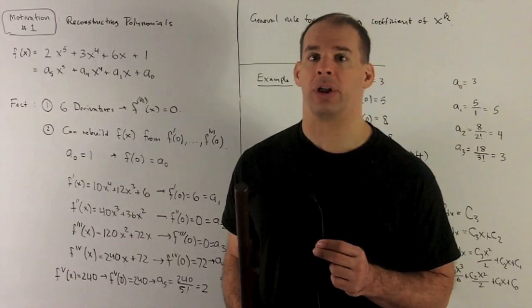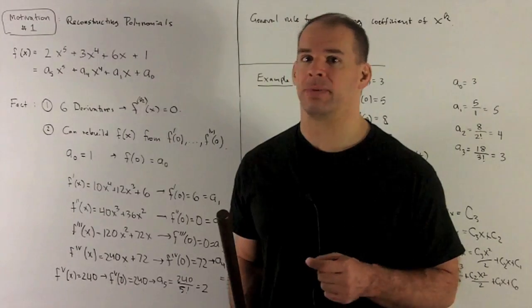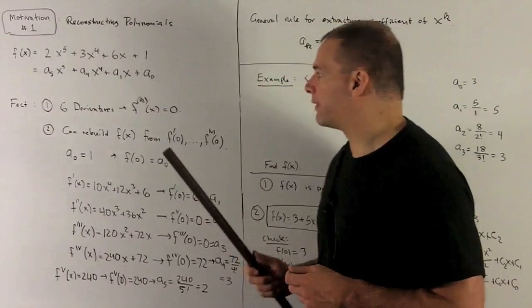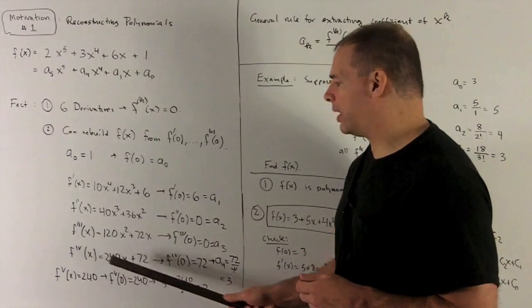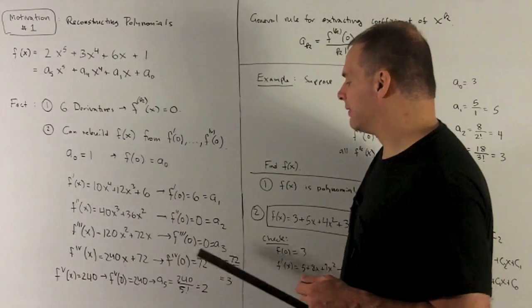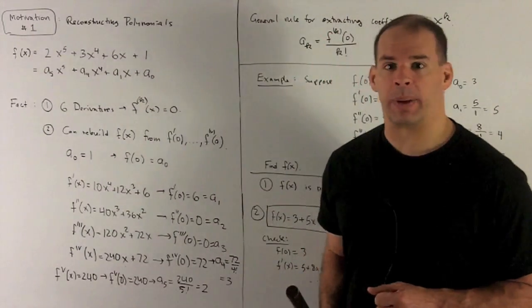And 24 is 4 factorial. If you note that 4 times 3 times 2 times 1, that's the definition of 4 factorial. So if I want to get that 3, I just take the derivative, fourth derivative evaluated 0, which is 72, divide by 24. That's going to give me the 3, and that gives me what we expect.